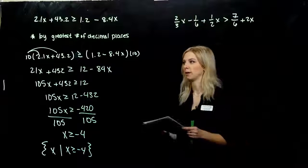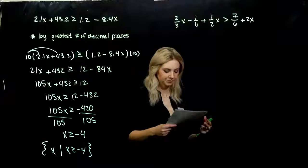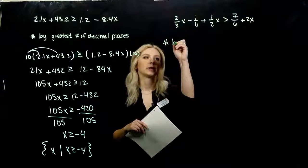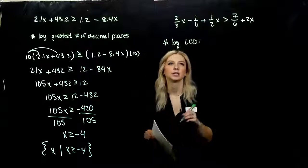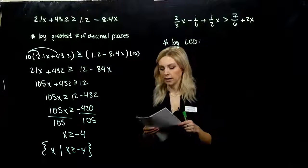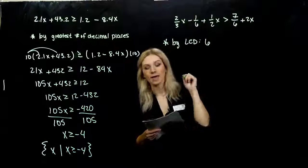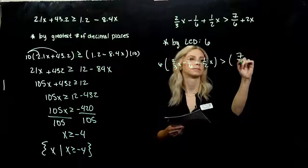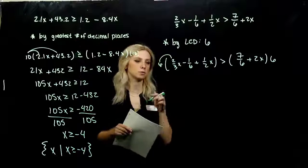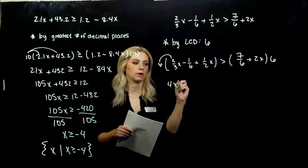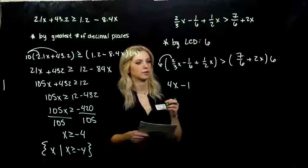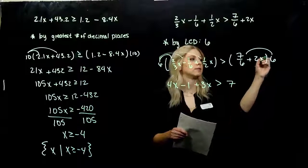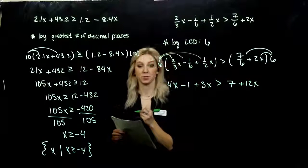So we can deal with decimals — multiply by a factor of 10 to clear them and deal with whole numbers. And what about fractions? I want to multiply by the LCD to clear those denominators. Between 3, 6, and 2, the LCD is 6. So if I multiply everything on both sides by 6: 6 divided by 3 gives me 2, times 2 gives me 4; 6 divided by 6 leaves minus 1; 6 divided by 2 gives me 3; 6 divided by 6 gives 1, so I'm left with 7; and 6 times 2 gives me 12x. We've cleared out all those denominators and we're dealing with whole numbers.